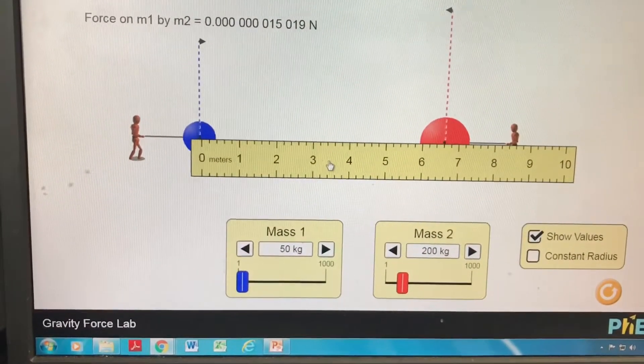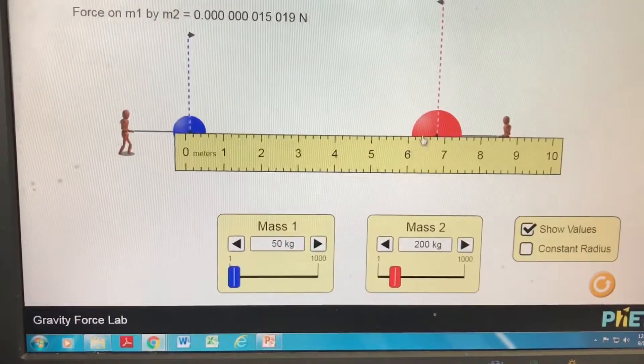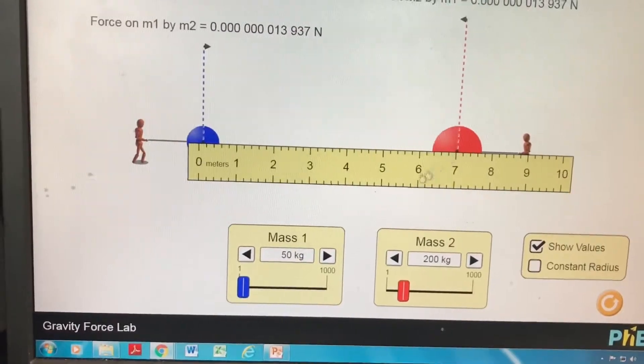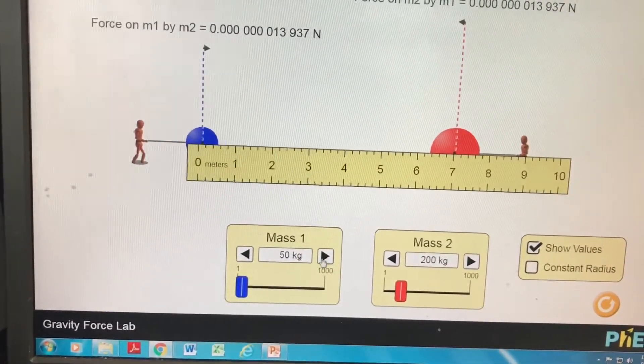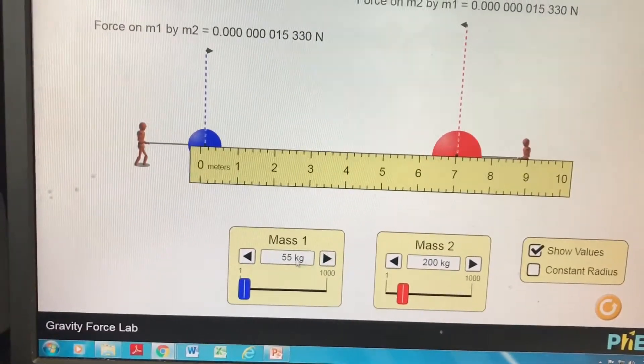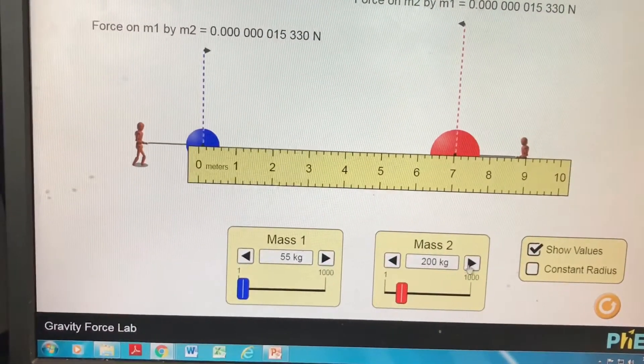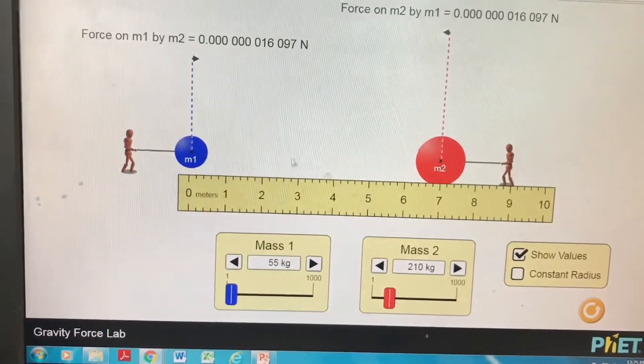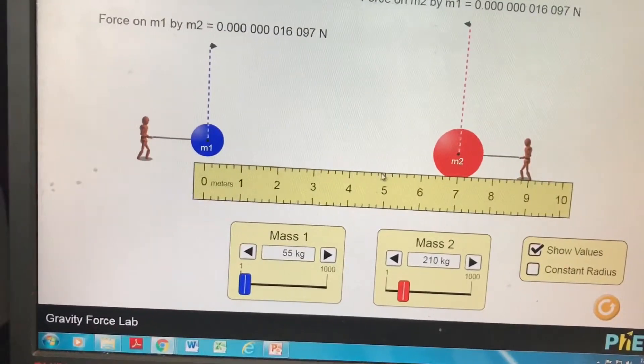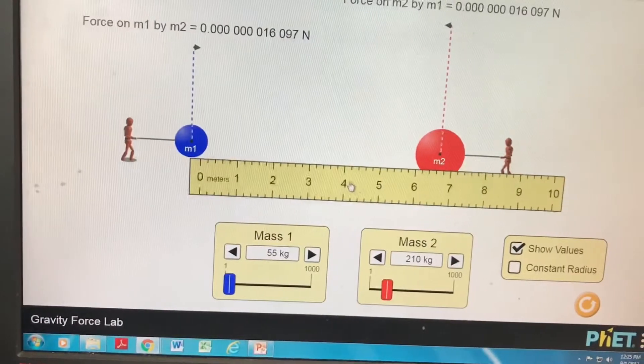For instance, right now they are at 7 meters and you can change the mass using the slider of each object - this is m1, mass 2. As you fill the table it will ask you to do various things.